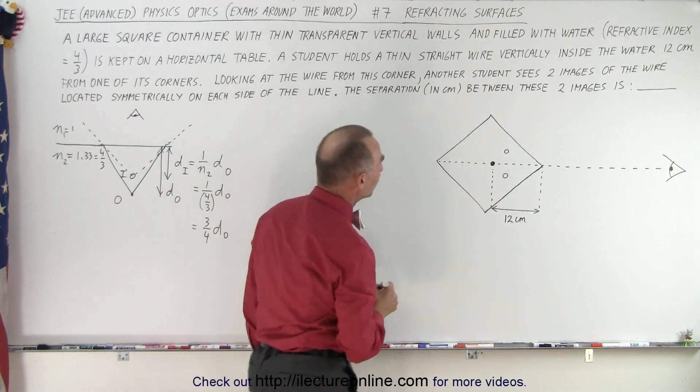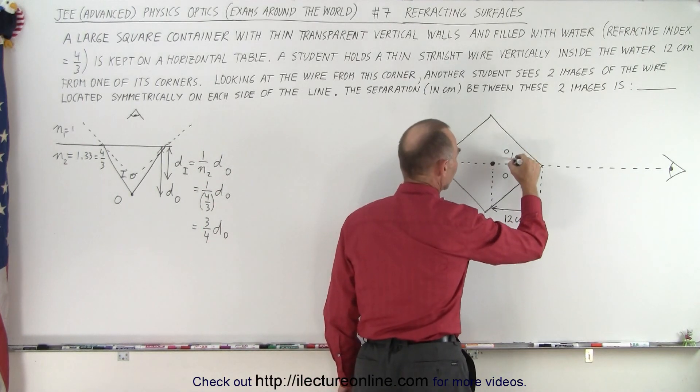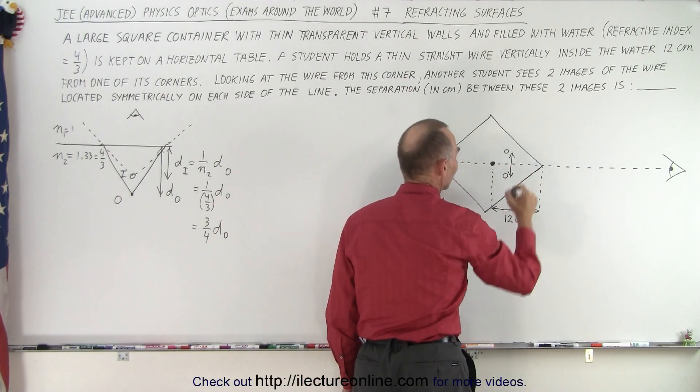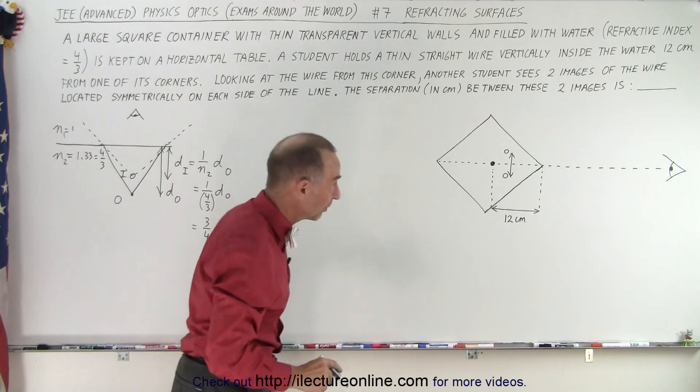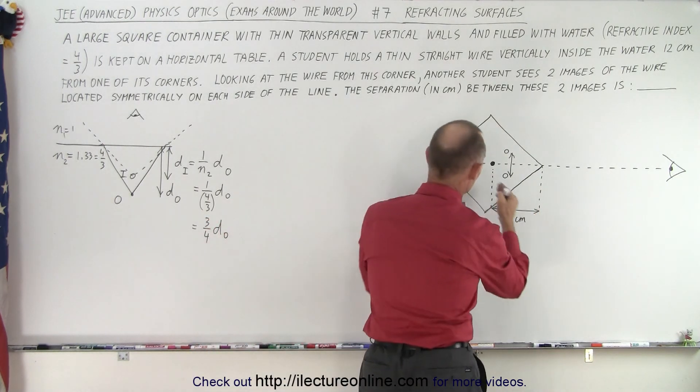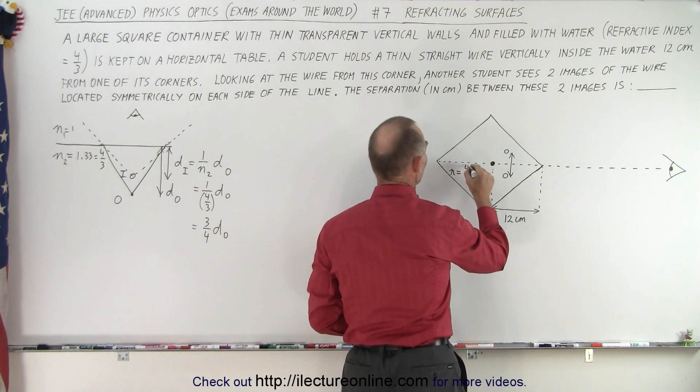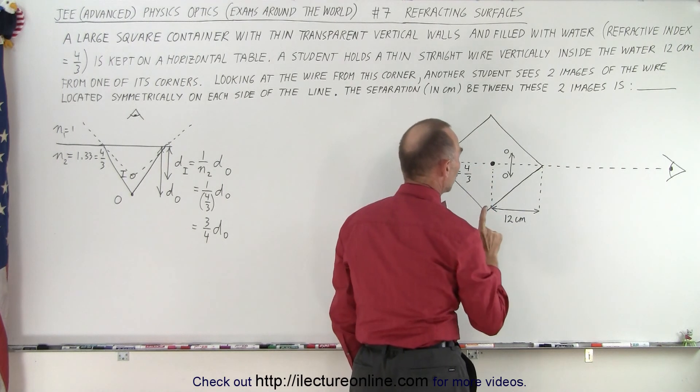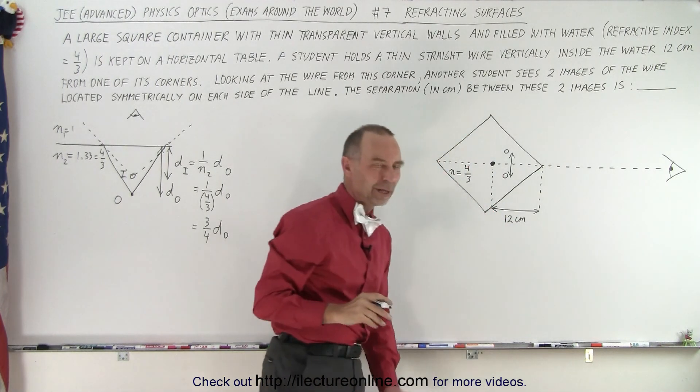The separation in centimeters between these two images is, so we're looking for the distance between the two images, in centimeters. Knowing that this is 12 centimeters, this is water, the index of refraction inside is 4 thirds. How far would those two images be apart?